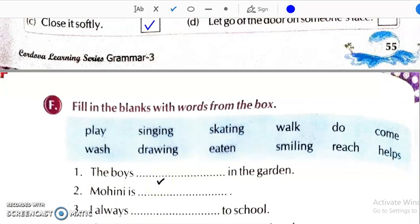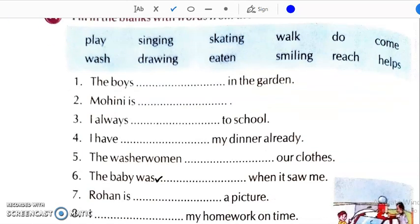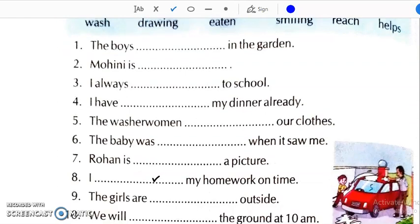Now, on the next page for the next exercise. Fill in the blanks with words from the box. Again, some verbs are here. Doing words are here. We have to select from the help box and write in the blanks. The boys dash in the garden. Garden mein bachche kya karte hain? They play.